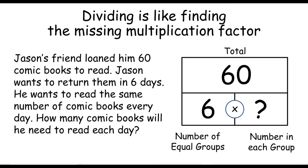Well, how are we going to find that out? It's a missing multiplication factor. So what we can do is think about what would I multiply 6 by to get 60? Hopefully you've become really fluent with tens multiplication, so you can think through the tens and say, oh look, 6 times 10 gives me 60.